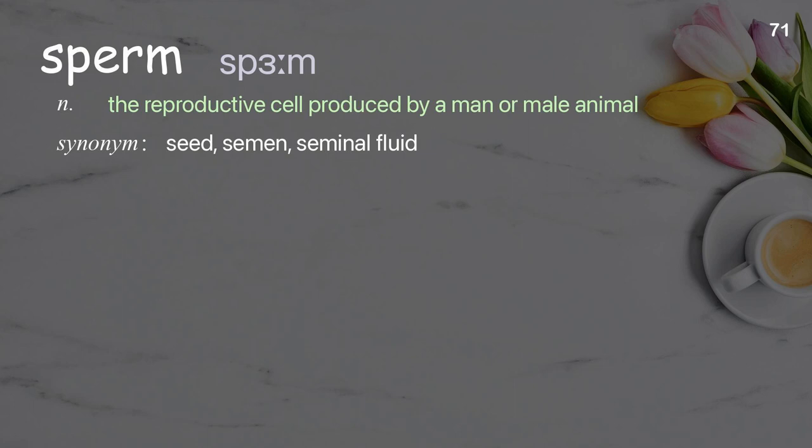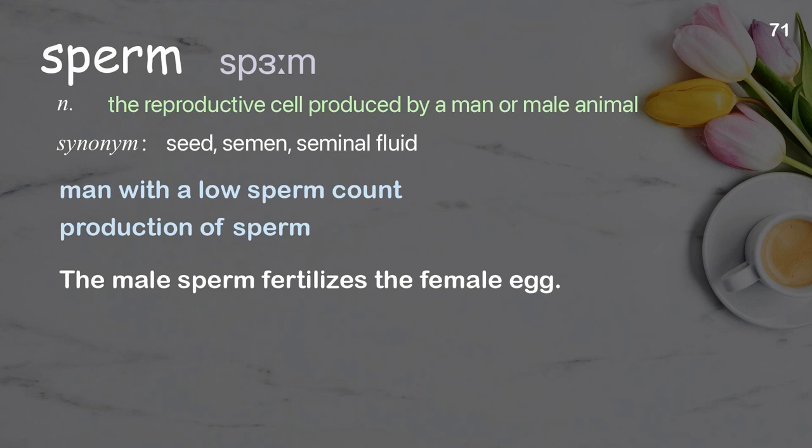Sperm: the reproductive cell produced by a man or male animal. Examples: man with a low sperm count, production of sperm.